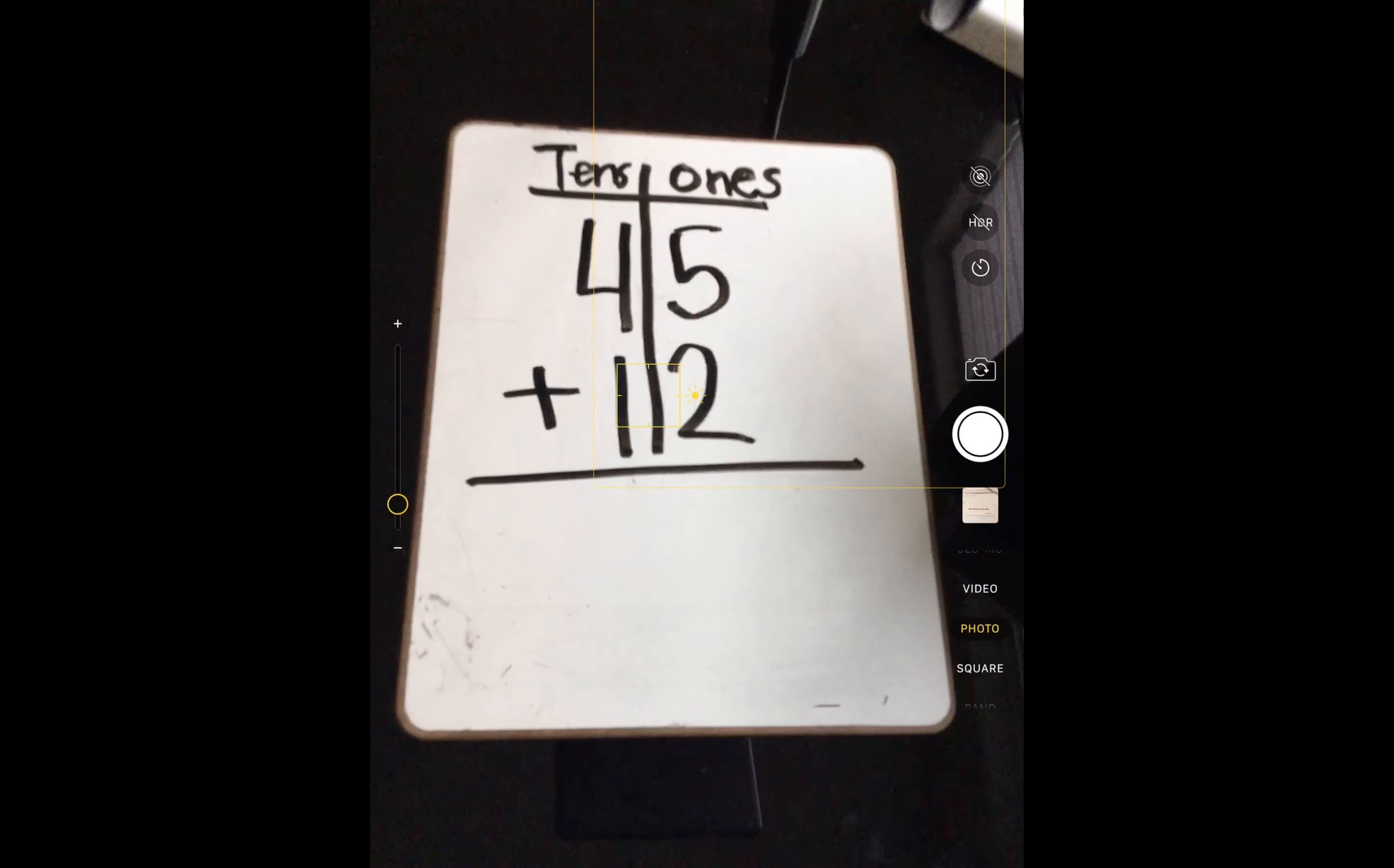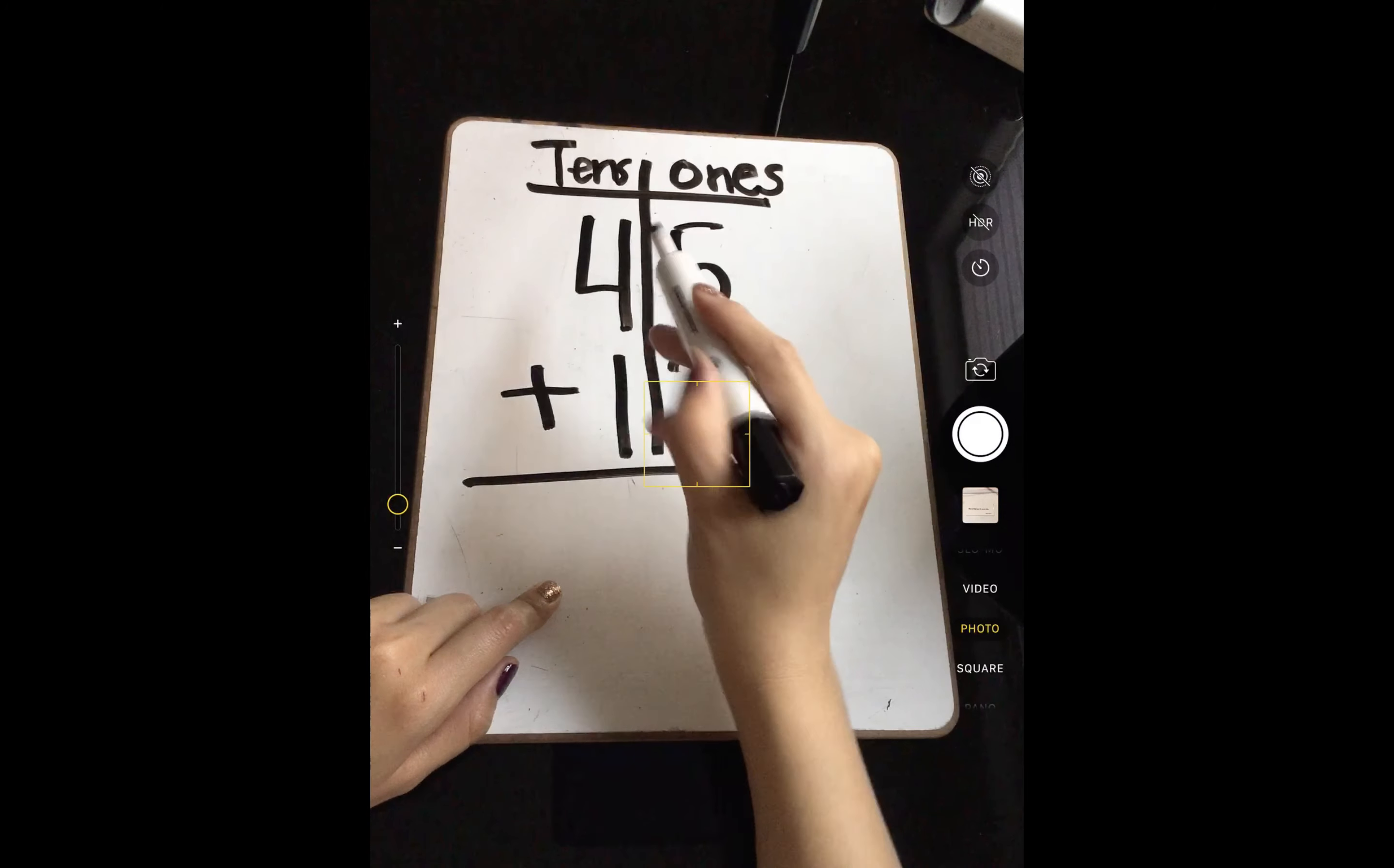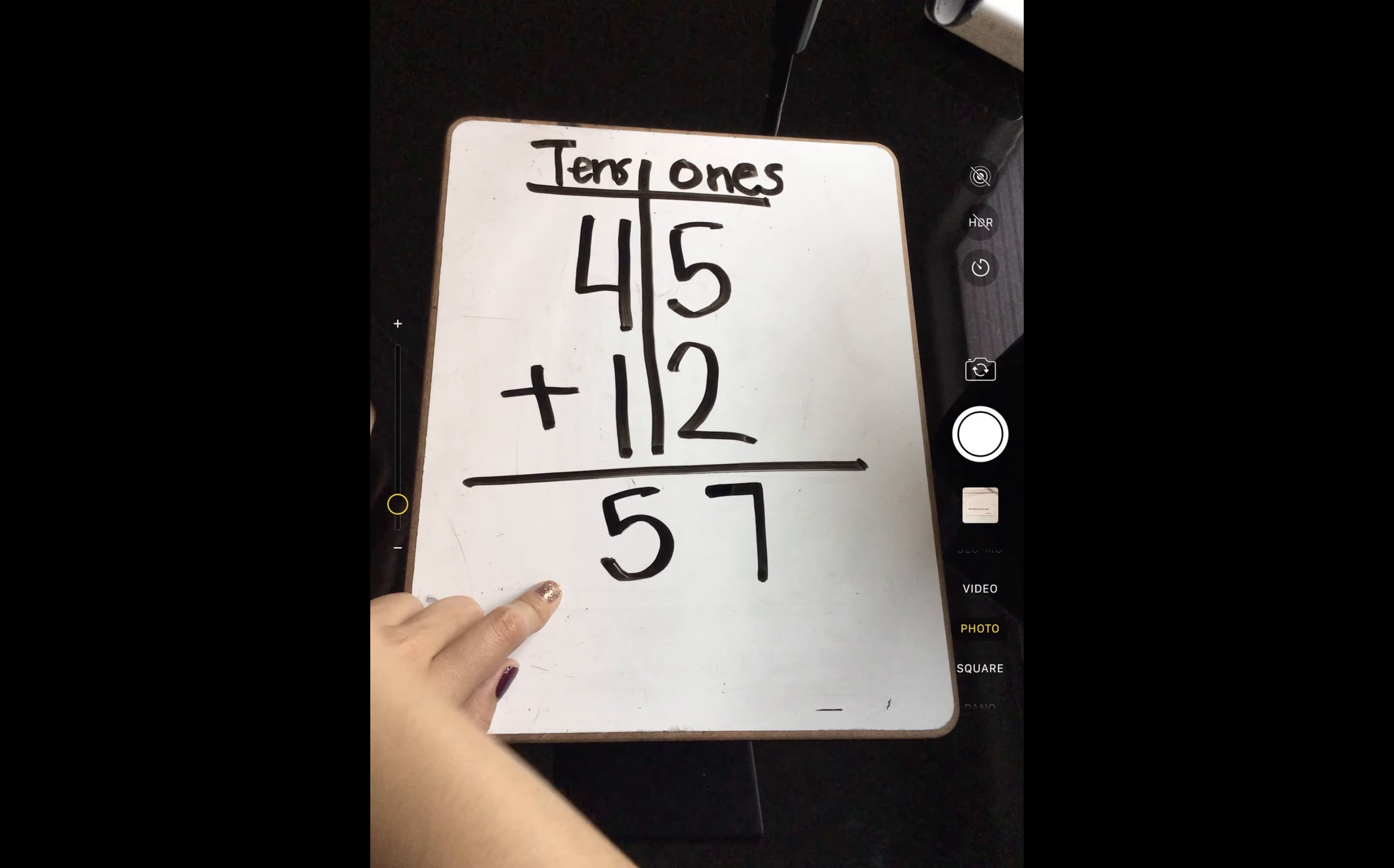So we have 5 plus 2. Well, 5, put 5 in my brain, and I count 2 more. 5, 6, 7. So it is 7 ones, and then 4 plus 1 is 5. So my sum is 57. 5 tens, 7 ones.